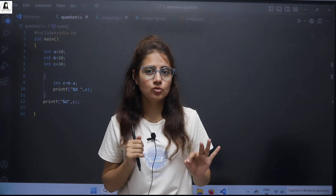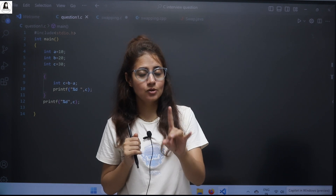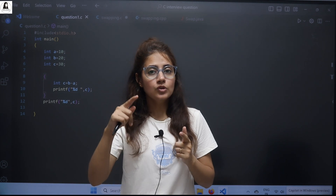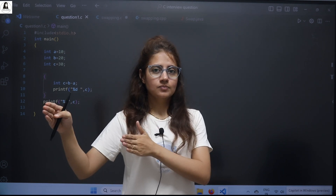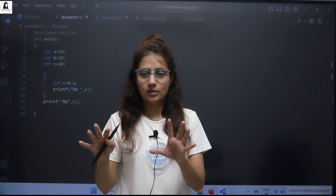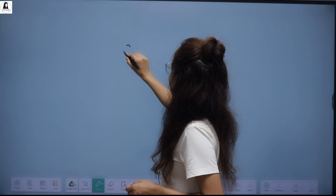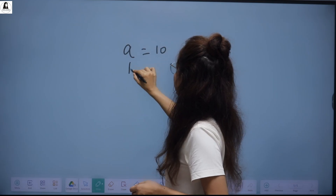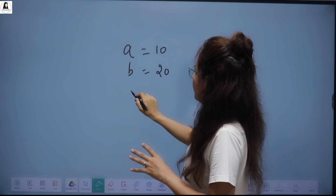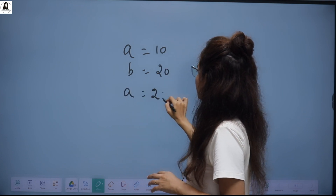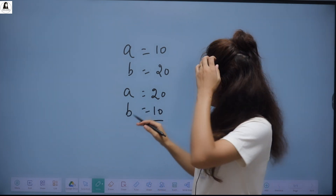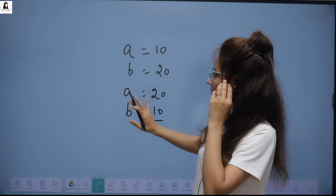The question is: how to swap two numbers? But the twist is you cannot use a third variable. So you have to swap two numbers without using a third variable. Swapping means you have two variables — A is equal to 10, B is equal to 20 — and you have to swap these values. After swapping, A should be 20 and B should be 10. This is called swapping.